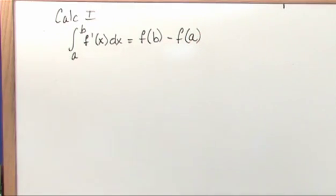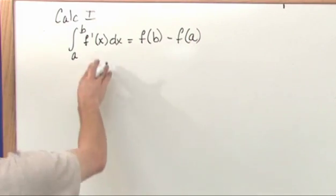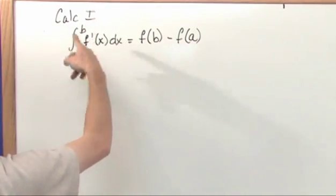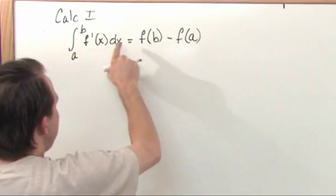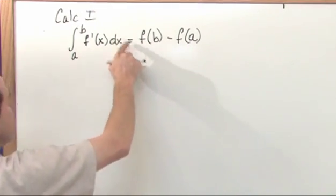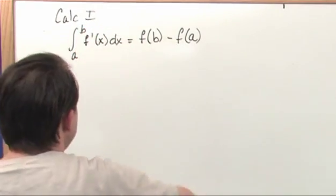This is a little different than you may have seen it written before, but what I'm really getting at here is you're integrating some function. Now this prime is a derivative. What you're really saying is if you integrate the derivative of something, then what you're going to get back is the original function, and you evaluate it from B to A.